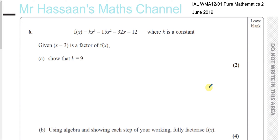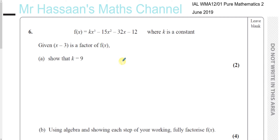Question number 6 from P2, International A-Level at Excel, June 2019. We have a question: part A and B are basically about the factor theorem and factorizing cubic expressions, and part C is about trigonometry. So let's get started straight away.